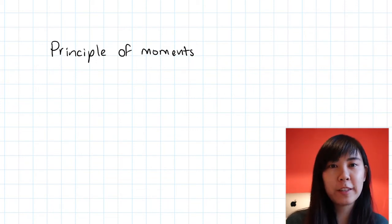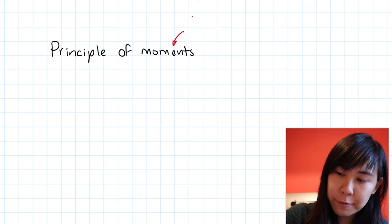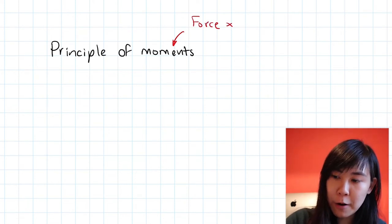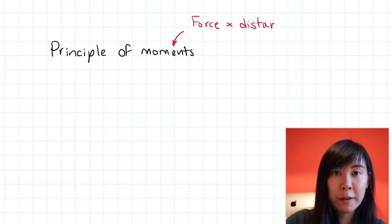Let's start by recapping what moment is. Moment is just the force applied times by the perpendicular distance to where the pivot is.